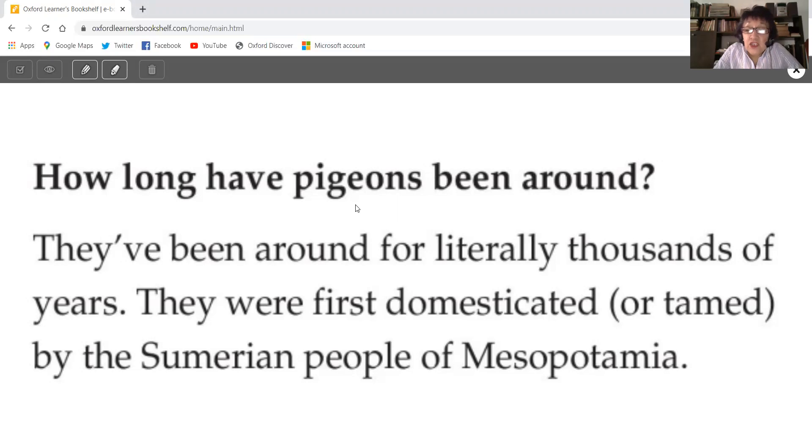A pigeon is a kind of dove, pigeon, paloma. And it says, how long have pigeons been around? They've been around for literally thousands of years. They were first domesticated or tamed by the Sumerian people of Mesopotamia.